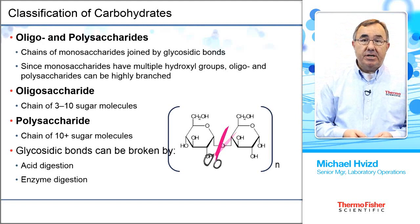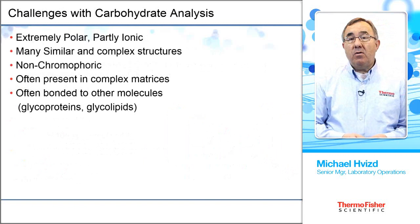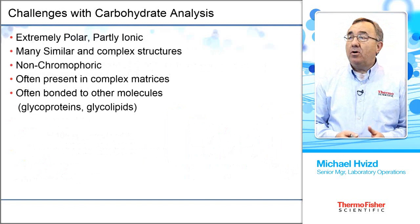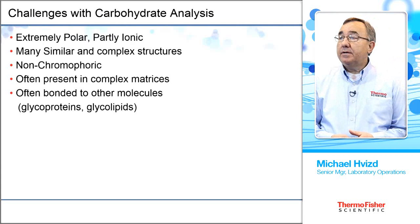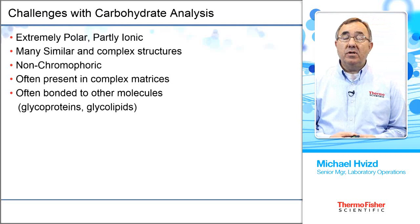Some of the challenges with carbohydrate analysis in the past are that carbohydrates are extremely polar and only partly ionic. Carbohydrates have many similar structures, but those structures are very complex. Carbohydrates are non-chromophoric, and they're often present in very complex matrices such as glycoproteins or glycolipids.